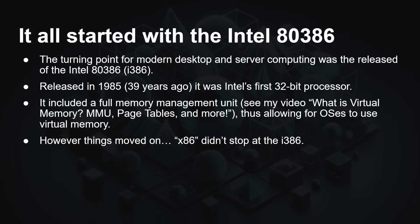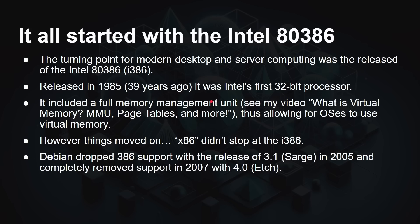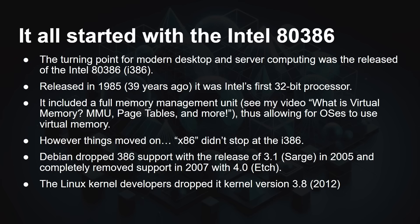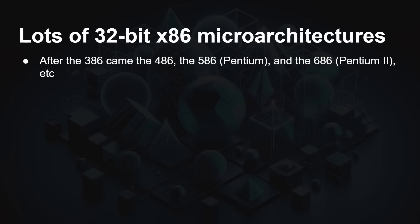Things didn't stop just with the x86 as defined by the Intel 386. There's always been more progression, things have changed. As time went past, this older chip and its microarchitecture and the instructions it had have kind of been dropped. Debian Linux dropped 386 support in 2005, completely removed it in 2007. The Linux kernel itself dropped support in 2012, even though Linux was originally developed on 386 and 486 machines. After the 386 came the 486, the 586, the 686, and so on. For naming purposes, they got called the Pentium — Pent for 5, 586 — and Pentium 2 and so on, because you can't copyright a number.